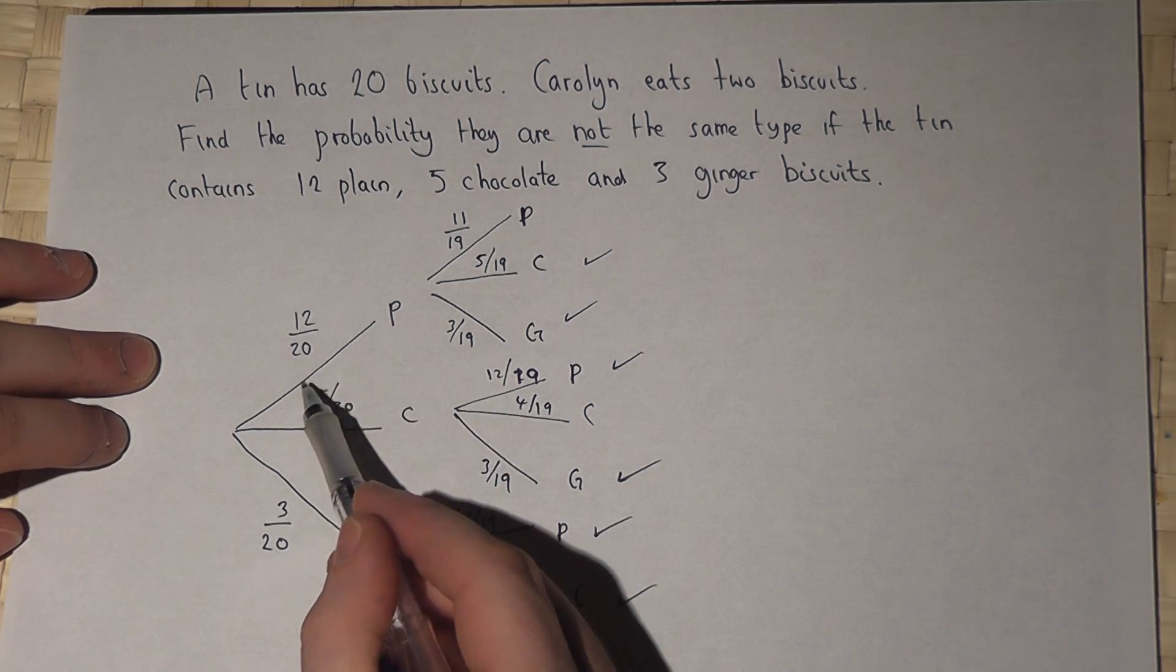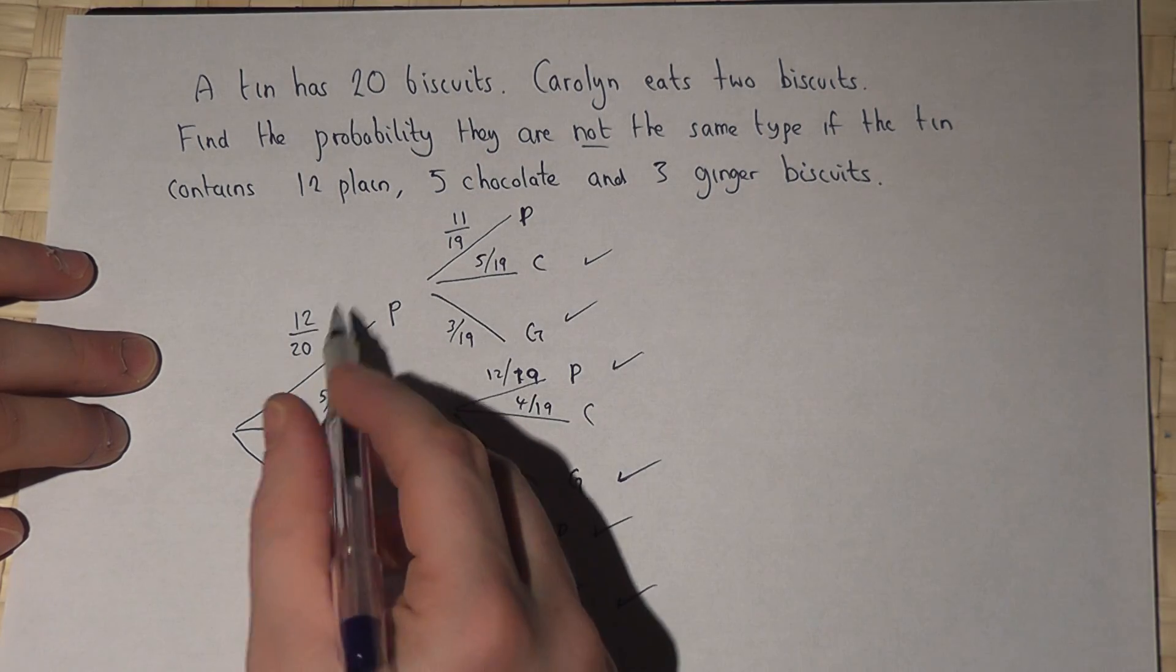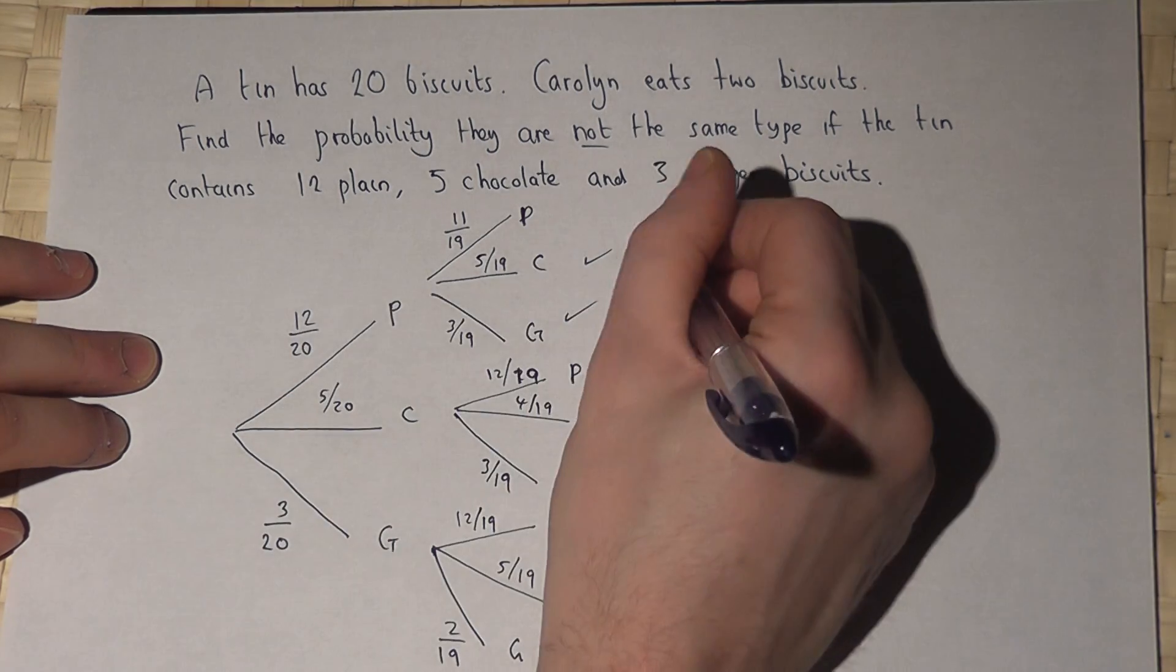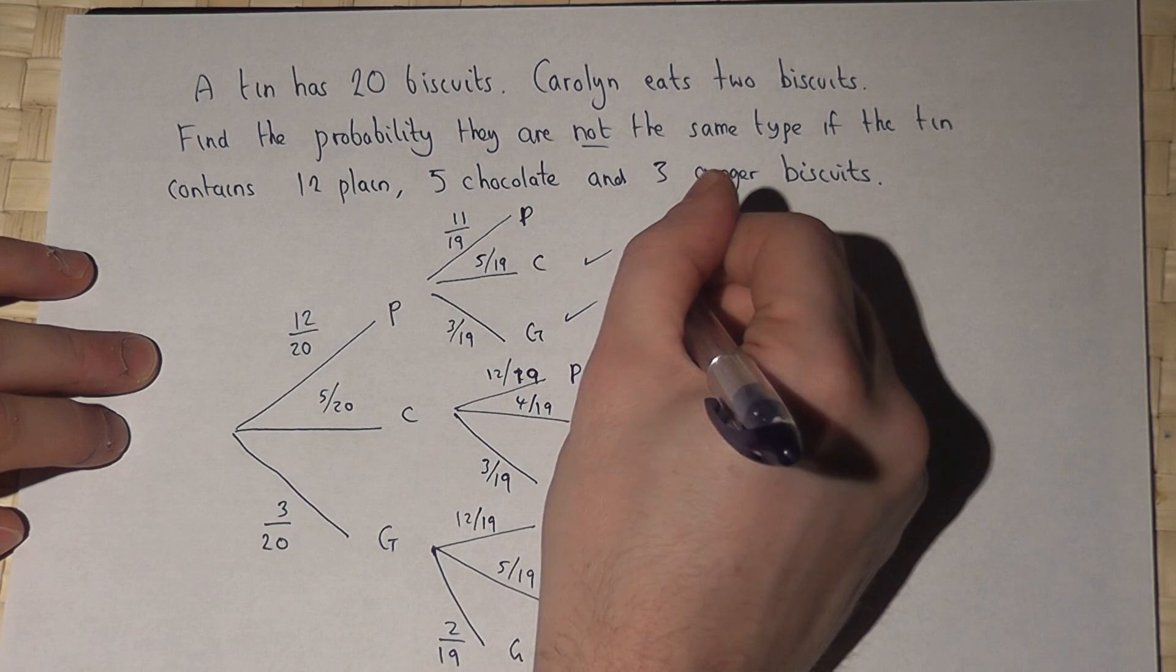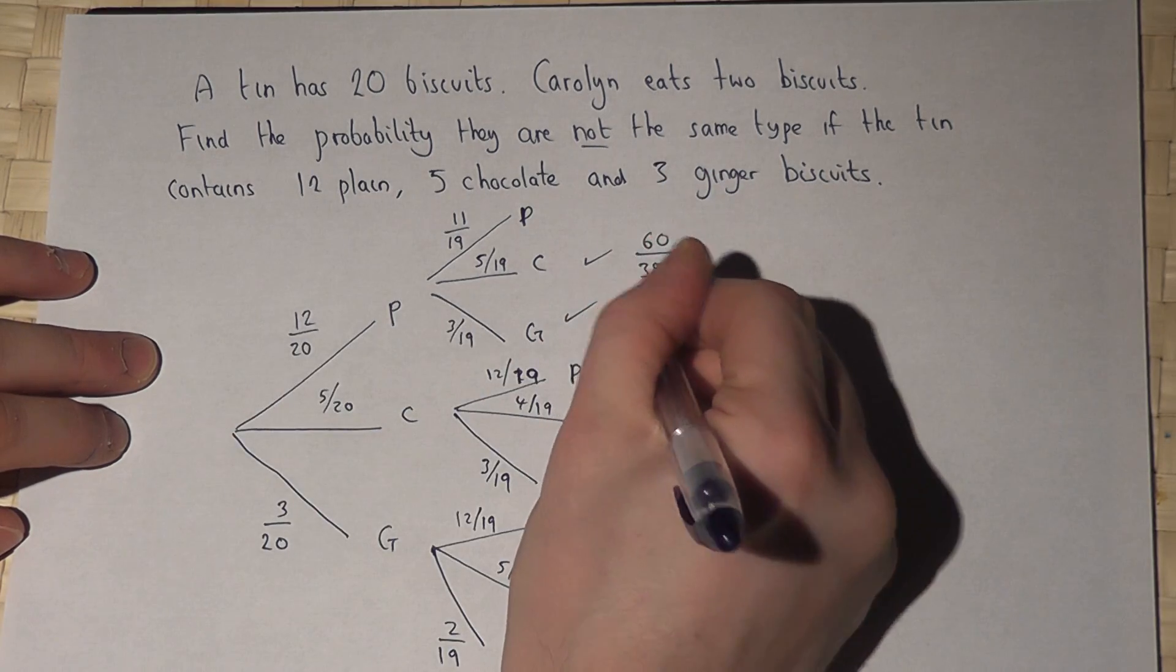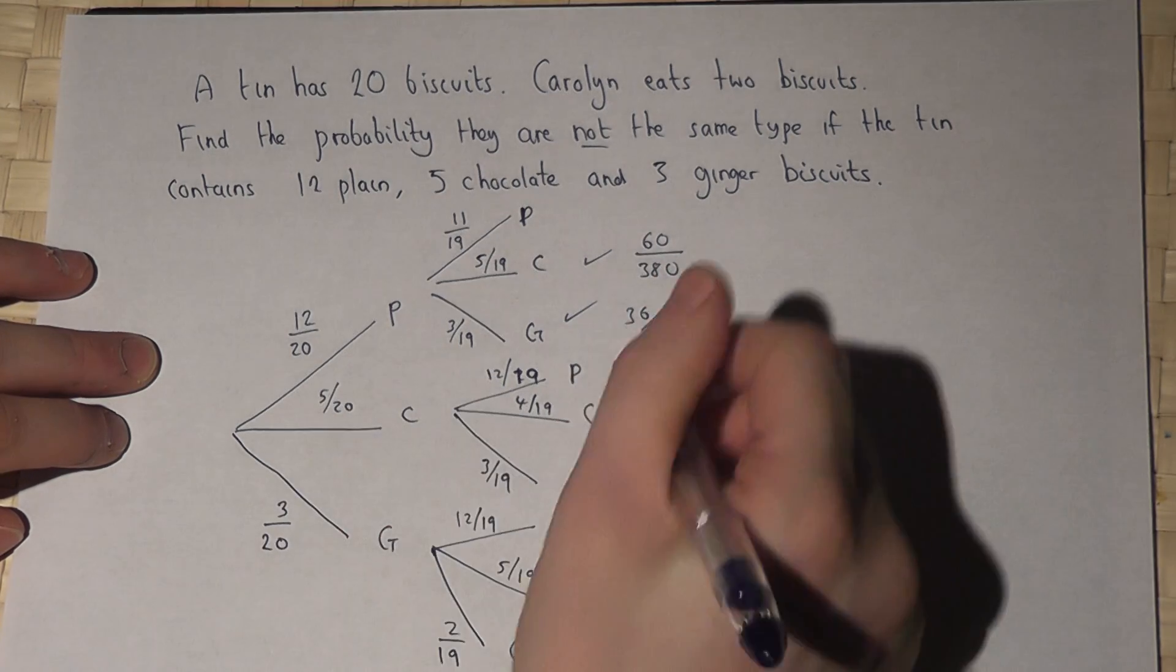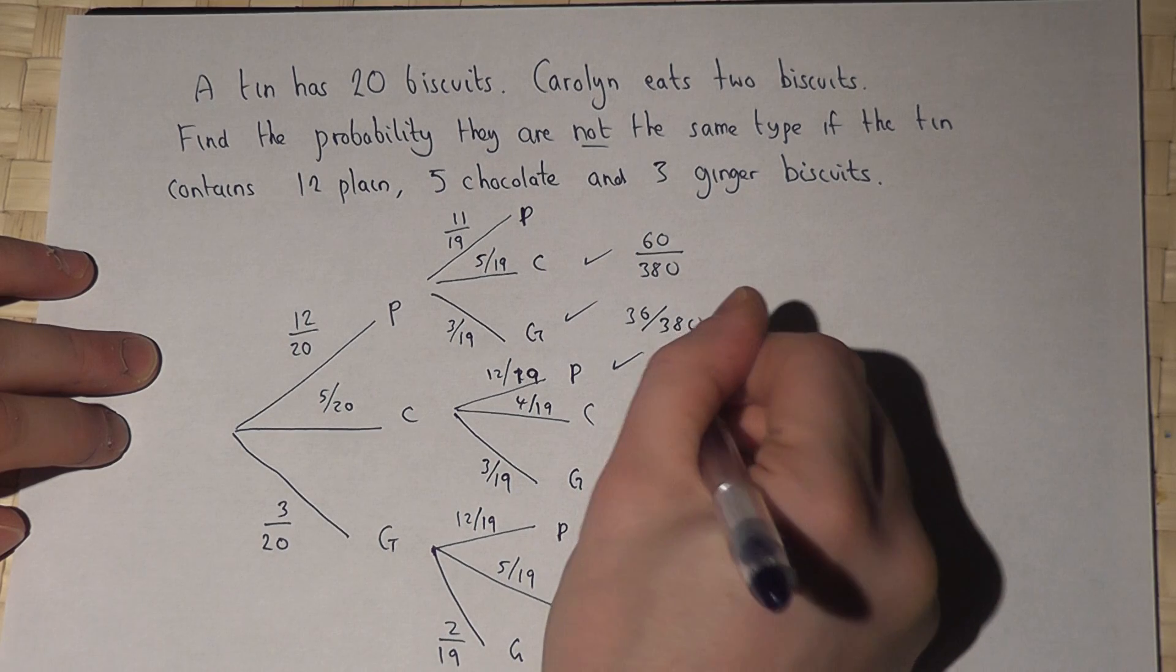So I must work out each of these by timesing together the fractions. This one is 12 times 5 is 60, so 60 over 380. This one is 12 times 3 is 36, so 36 over 380. 5 times 12 is 60, so 60 over 380.